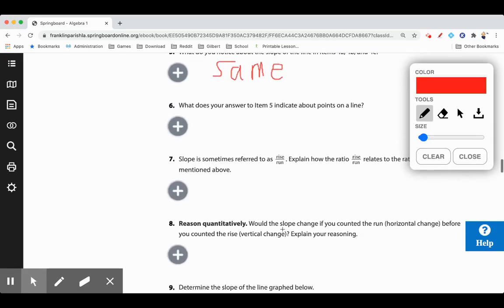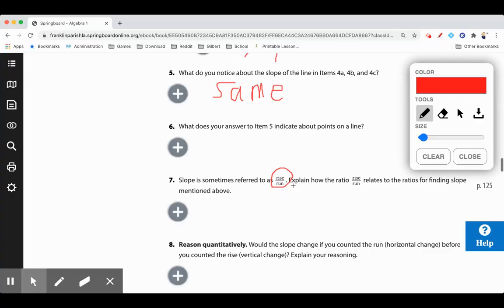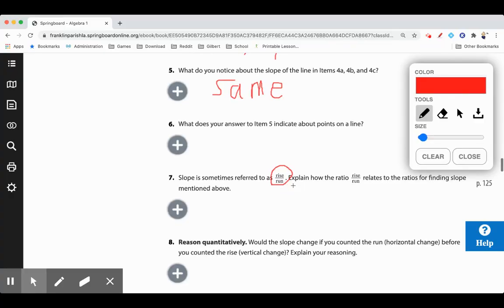Slope is sometimes referred to as rise over run. That is a very important way to help remember it. Rise is your Y, run is your X. So let's explain how the ratio relates to finding the slope. Change in Y over change in X equals rise over run.